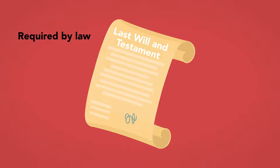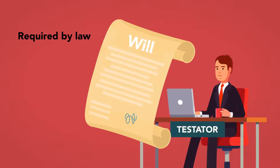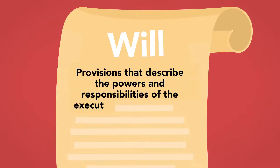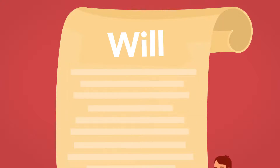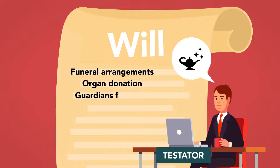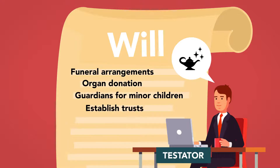Wills may include other provisions which are either required by law or are important to the testator. For example, wills usually contain provisions describing the powers and responsibilities of the executor under state law, and may also specify the testator's wishes with regard to funeral arrangements, organ donation, and guardians for minor children, and can establish trusts to be funded after death.